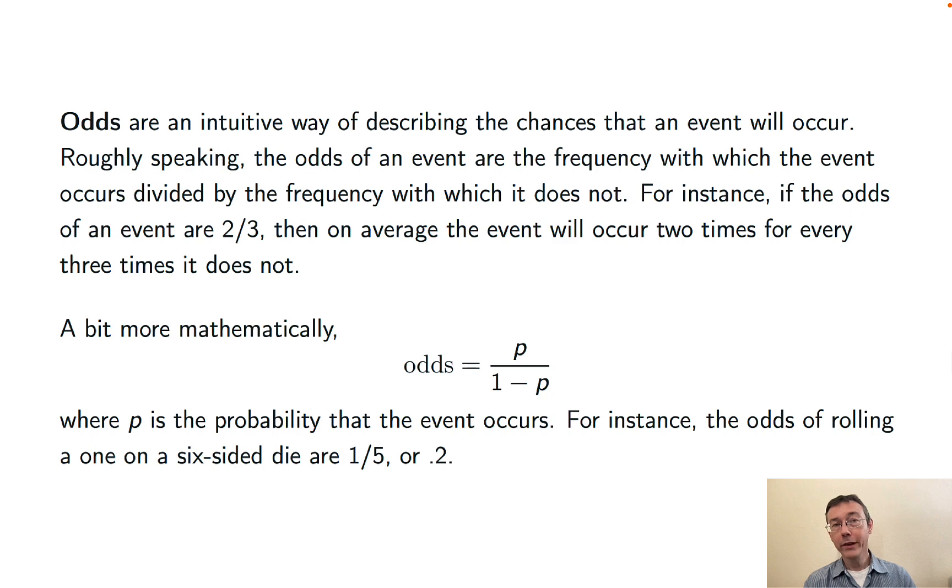For instance, if you're rolling a six-sided die and the event you're interested in is getting a one, the probability is one in six, the odds are one in five, or 0.2, because there's one way it can occur and five ways it can fail to occur.